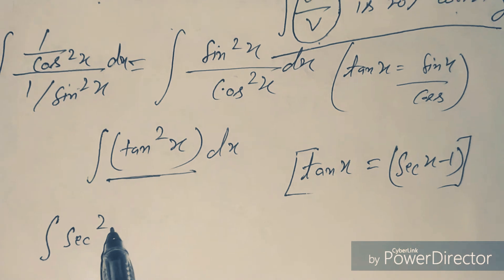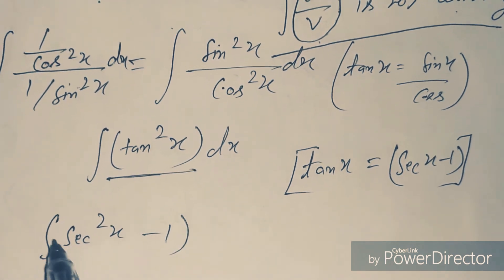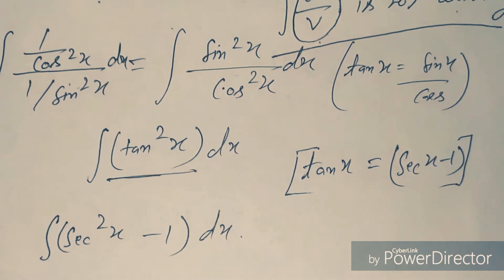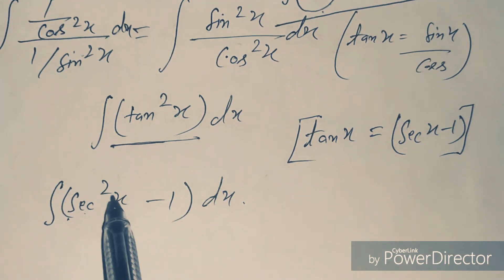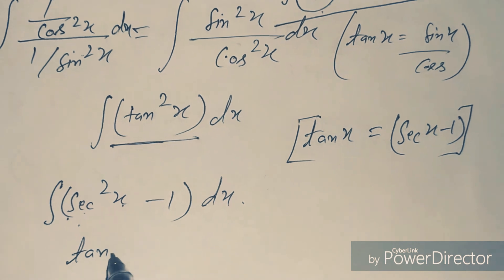Now we integrate this equation. Integration of sec²x is tan x, minus the integration of 1 that is x, plus C. That is the answer.